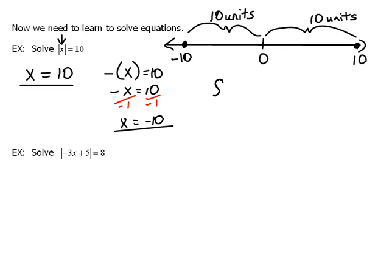So, our solution is the set of numbers that are negative 10 and also 10. So, we write that in braces to show that that is a set of answers.